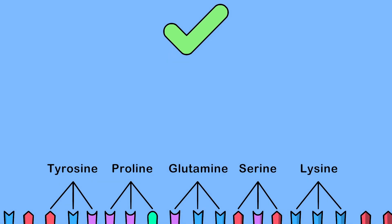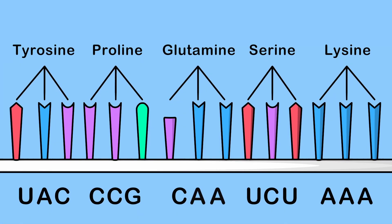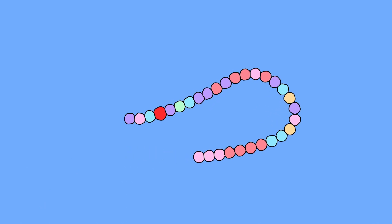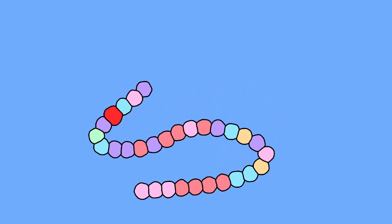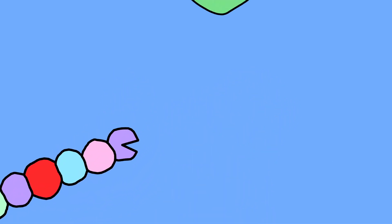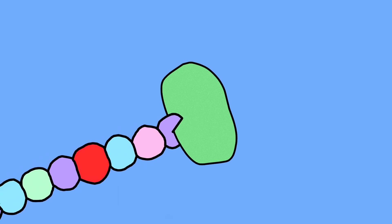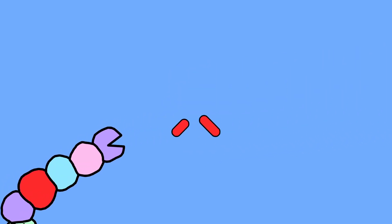But what happens when we have a mutation that changes a DNA letter, which in turn changes the amino acid sequence of this protein? This particular amino acid change causes the whole protein to lose its activity.